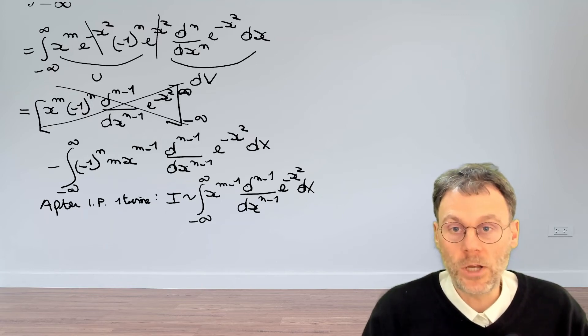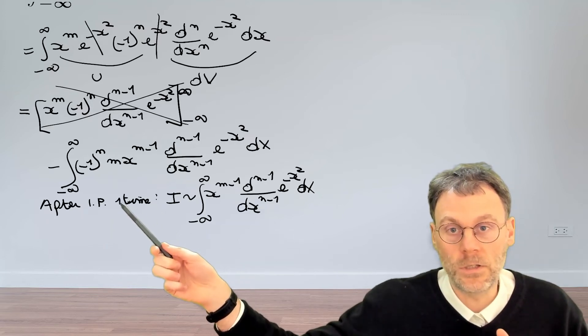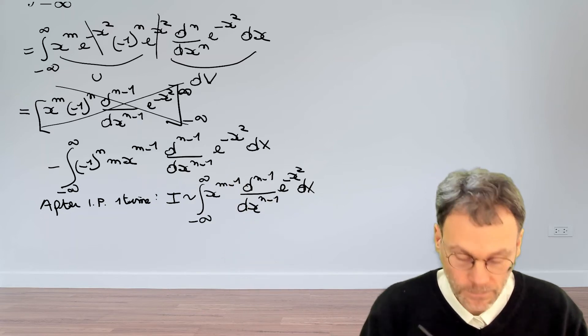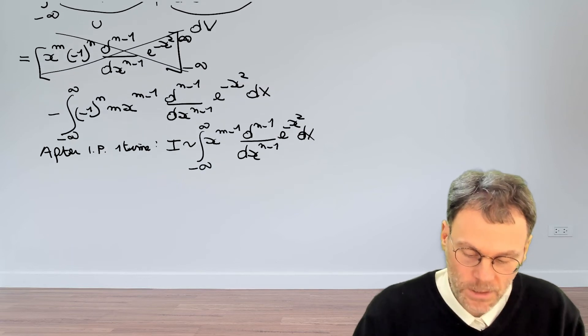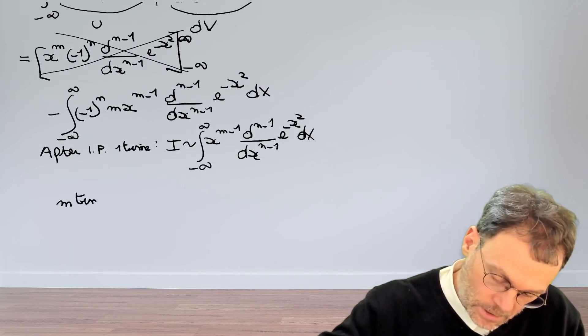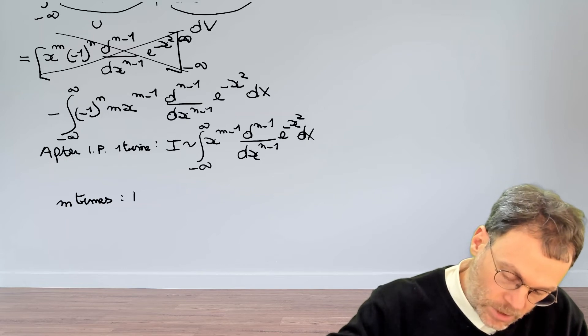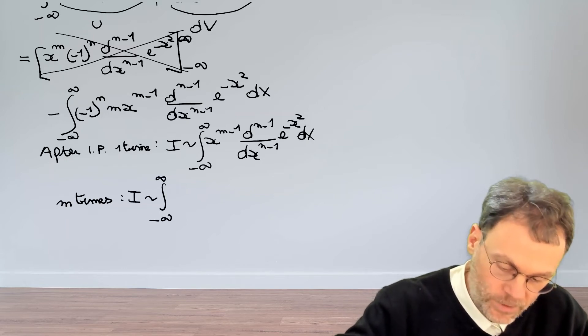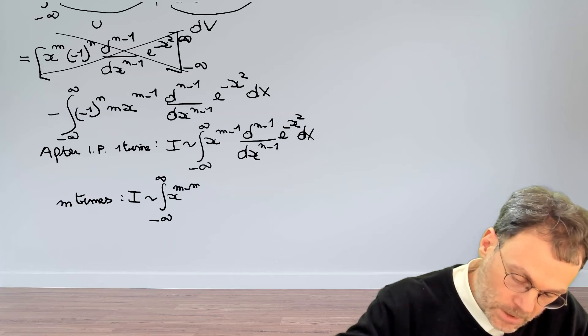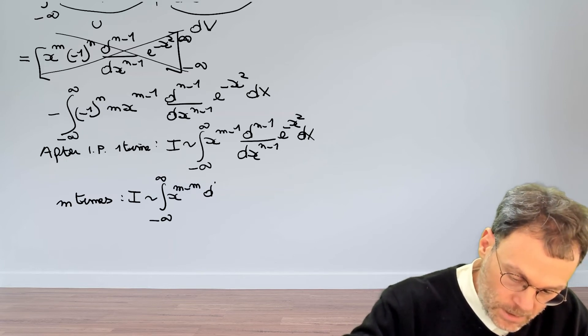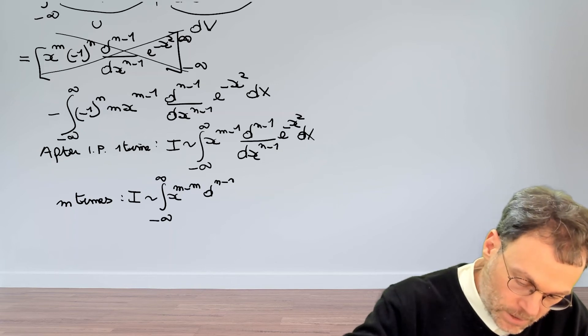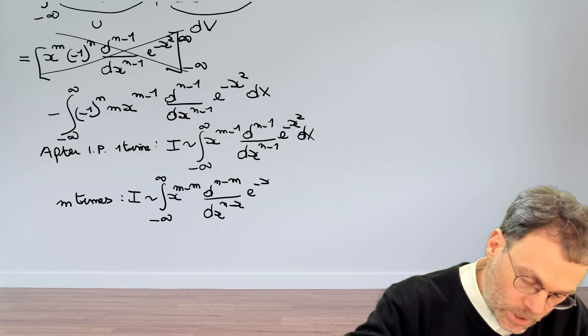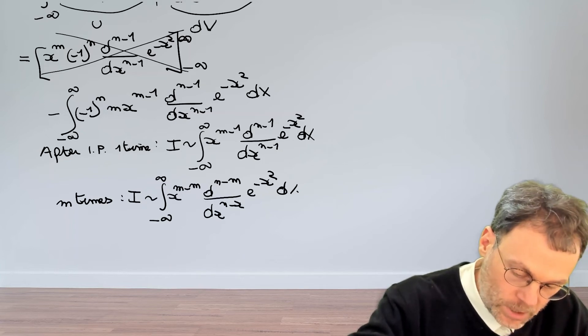If we do integration by parts once, you see that the result is that we have here a minus one and also here a minus one. Obviously, this means that if we do this m times, then our integral will become proportional to an integral from minus infinity to plus infinity, x to the m minus m, d n minus m, dx n minus m, exponential minus x squared dx.